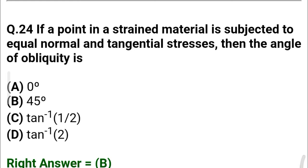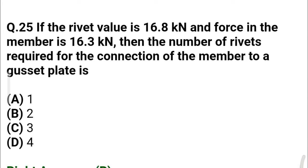Next question: If the rivet value is 16.8 kN and the force in the member is 16.3 kN, then the number of rivets required for the connection of the member to the gusset plate is — option A: 1, option B: 2, option C: 3, option D: 4. The correct answer is option B: 2.